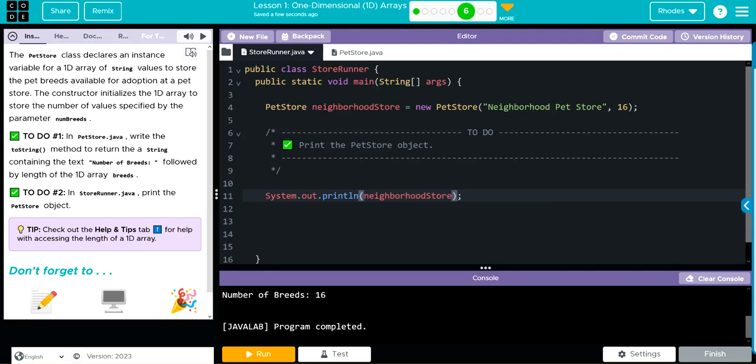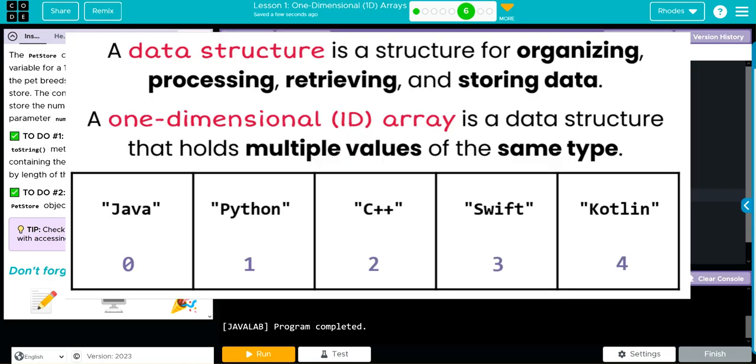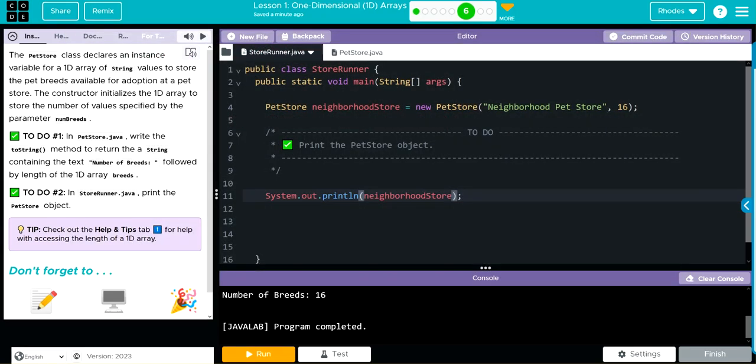The key to this lesson is understanding what a 1D array is: a data structure for organizing, processing, retrieving, and storing various same types of data. Ints for ints, doubles for doubles, booleans for booleans, strings for strings. Note that when we create these arrays, they're empty and filled with a null value for each data type.